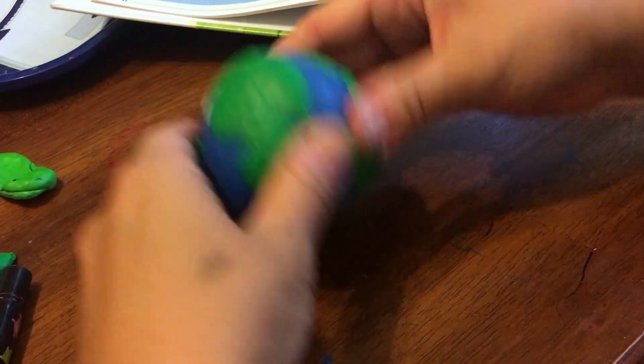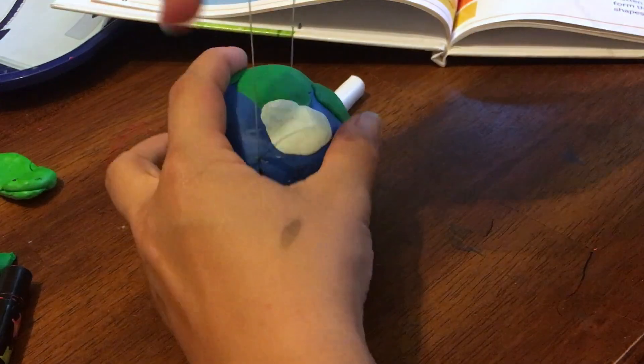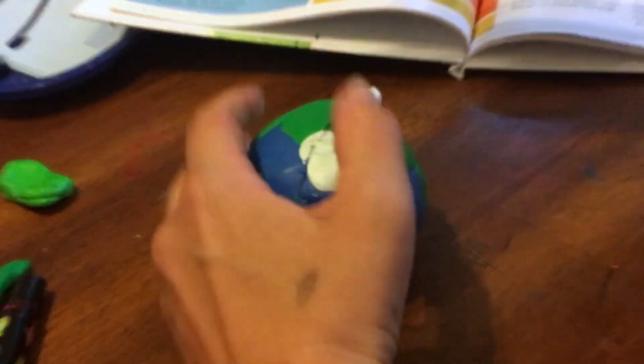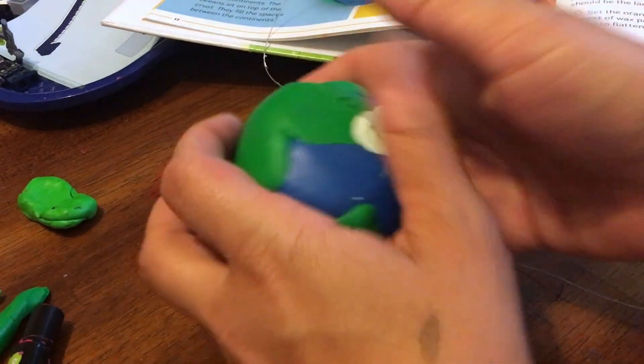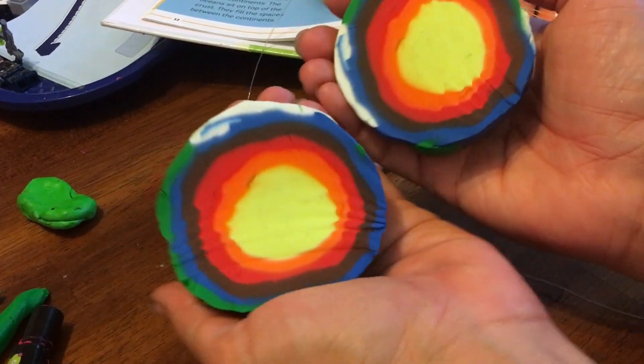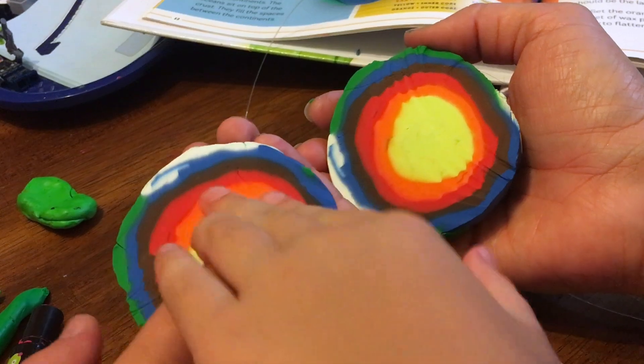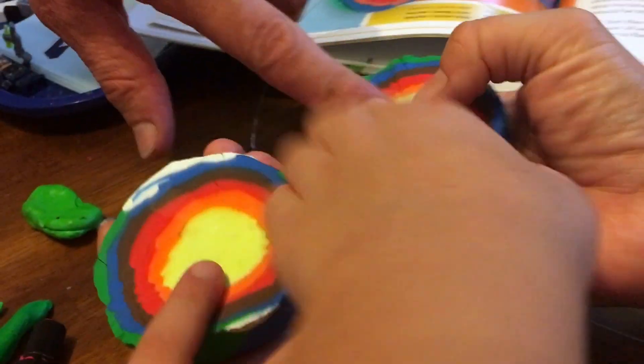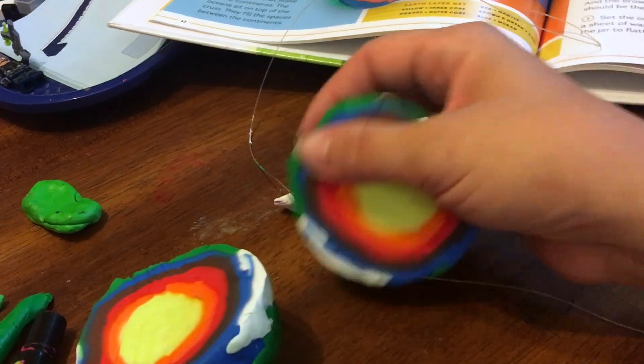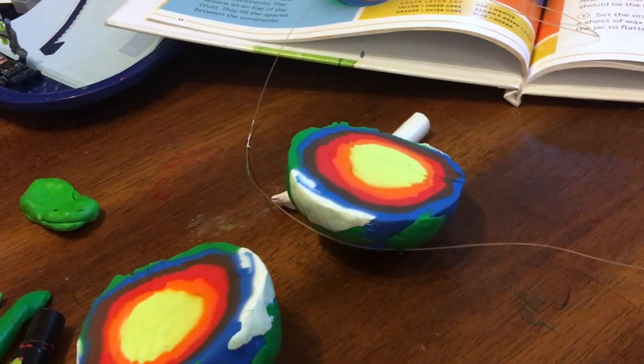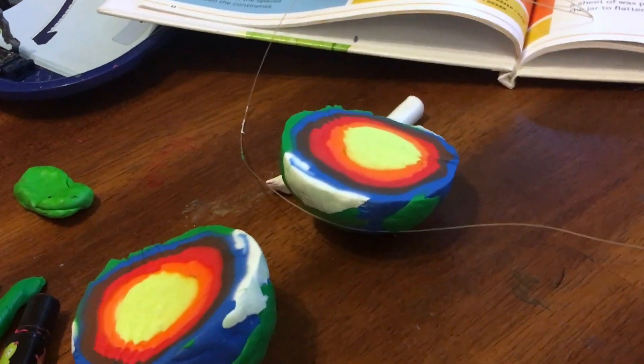All right, let's see what we've got inside. So we've got the inner core, the outer core, the mantle, the crust.